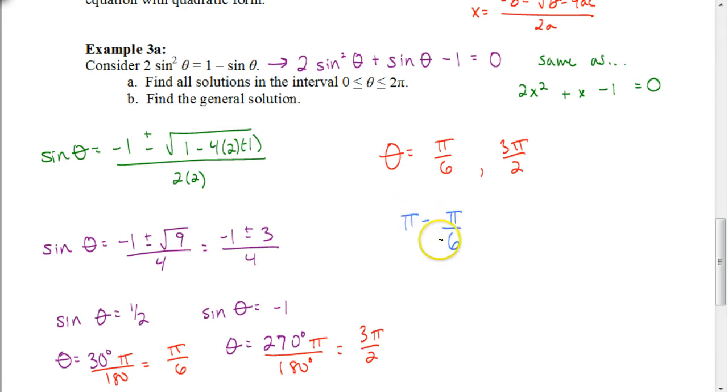You can't do that because we don't have a common denominator. So I have to change this to be 6 pi over 6. And 6 pi minus 1 is 5 pi. So we get 5 pi over 6 as our other solution.